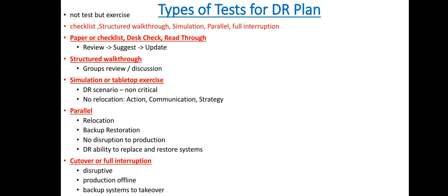The final test, also known as the cut-over or full interruption test, involves a disruption of operational services. Services at the primary site are taken offline and then restored from the alternate site. The backup systems at the alternate site restore data from the backup drive and perform operations in place of the primary site.